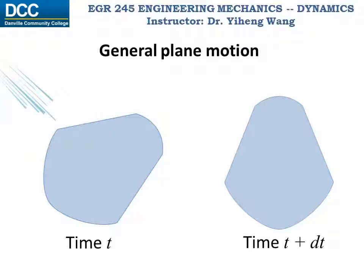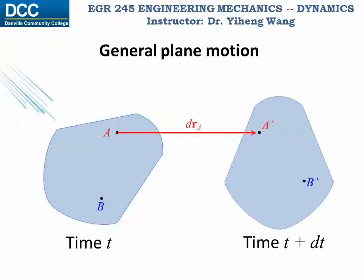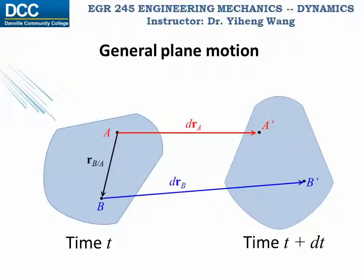To study general plane motion, let's focus on the motion of two arbitrary particles in this rigid body: particle A and particle B, which have moved into two new locations. During motion, the displacement of particle A is vector drA, and the displacement of particle B is vector drB. The initial relative position of particle B relative to A is r_B/A, and after the motion the relative position of particle B is r_B/A prime.